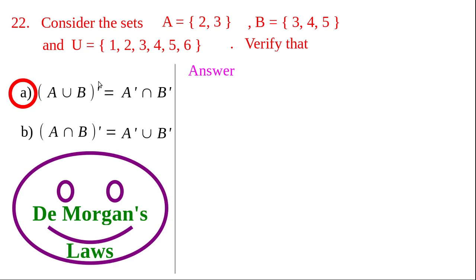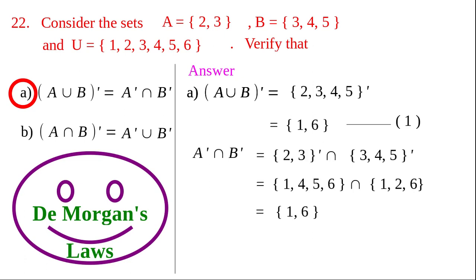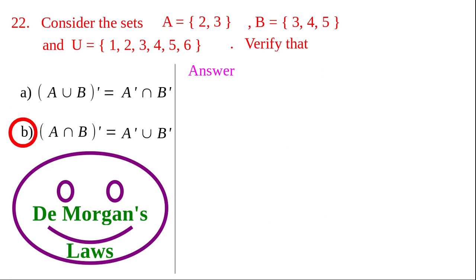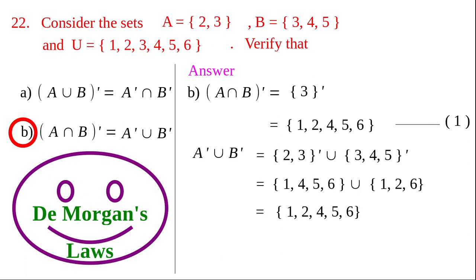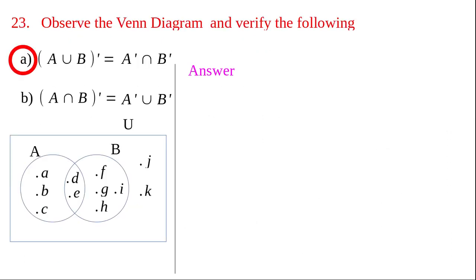Question 22 is a repetition of question 21, so do the problem yourself and verify your answer with what is on the screen. For question (a): (A union B) whole dash equals {2, 3, 4, 5} whole dash — equation 1 — and A dash intersection B dash equals {1, 6}, both sides match. For question (b): the right-hand side of (A intersection B) whole dash and A dash union B dash both equal {1, 2, 4, 5, 6}, verifying De Morgan's law.